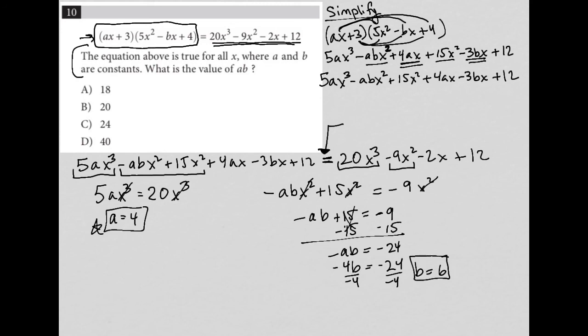So I have a positive six for B, a positive four for A. The question just wants me to figure out what AB is. So AB must be four times six. And that is equal to 24. And therefore, the correct answer here is choice C.